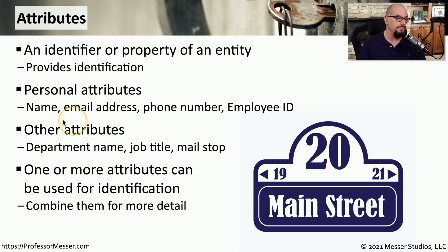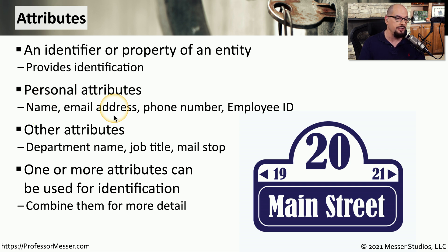We could use just one attribute to identify someone — for example, a name. But there may be cases where different employees share the same name. In those cases, we may want to add additional attributes such as an email address or phone number to be sure we know exactly who that user might be.